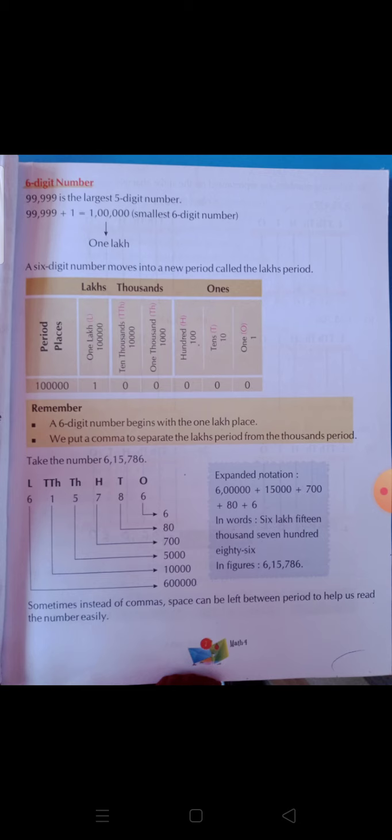A six-digit number starts from the one lakh place. Next, we put a comma to separate the lakhs period from the thousands period, just as we used a comma to separate the ones period from the thousands period.